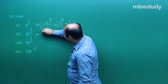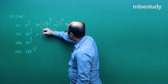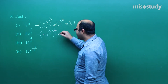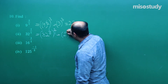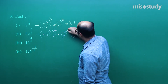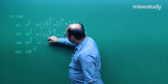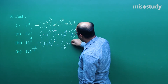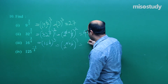For 32^(2/5): we can write this as (32^(1/5))², or equivalently (2^5)^(1/5) all squared. The 5 cancels and we get 2² = 4. For 16^(3/4): 16 = 2^4, so 16^(3/4) = (2^4)^(3/4) = 2^(4 × 3/4) = 2³ = 8.